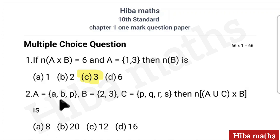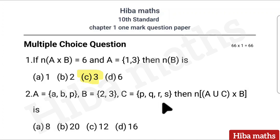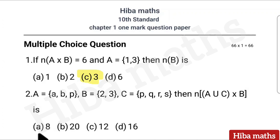Second question: A is equal to {A, B, P}, B is equal to {2, 3}, C is equal to {P, Q, R, S}. Then n(A ∪ B × B) is — options are 8, 20, 12, and 16.